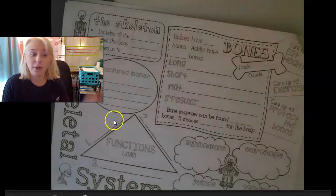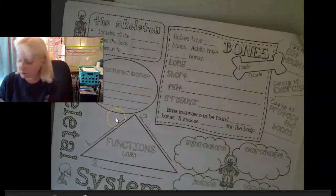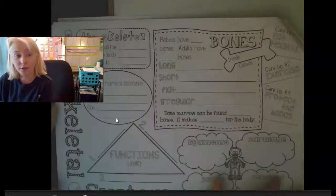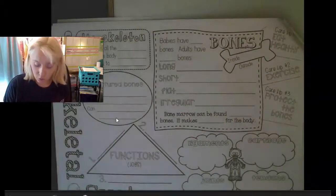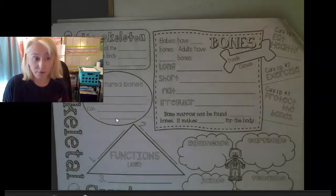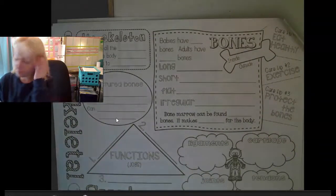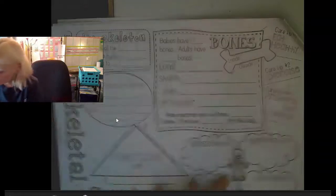Then we're going to paste it into our science notebook. Trim away the white edges, put some glue on the back of the paper, and paste it right onto one of the pieces of paper in your notebook. You can pause and do that, then hit play when you're ready to move on and fill in the notes.